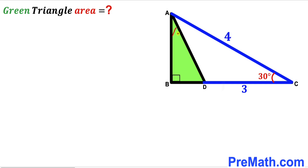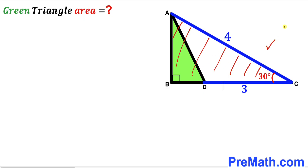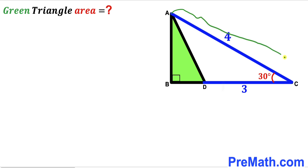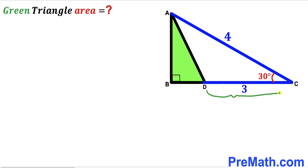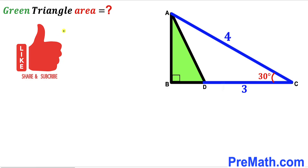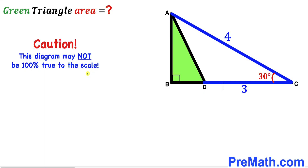Welcome to PreMath. In this video we have got a green shaded right triangle ABD fully confined in a bigger right triangle ABC, such that angle ACD is 30 degrees. The hypotenuse AC length is 4 units and segment CD length is 3 units. Our task is to calculate the area of the green right triangle ABD. Please keep in mind that this figure may not be 100% true to scale.